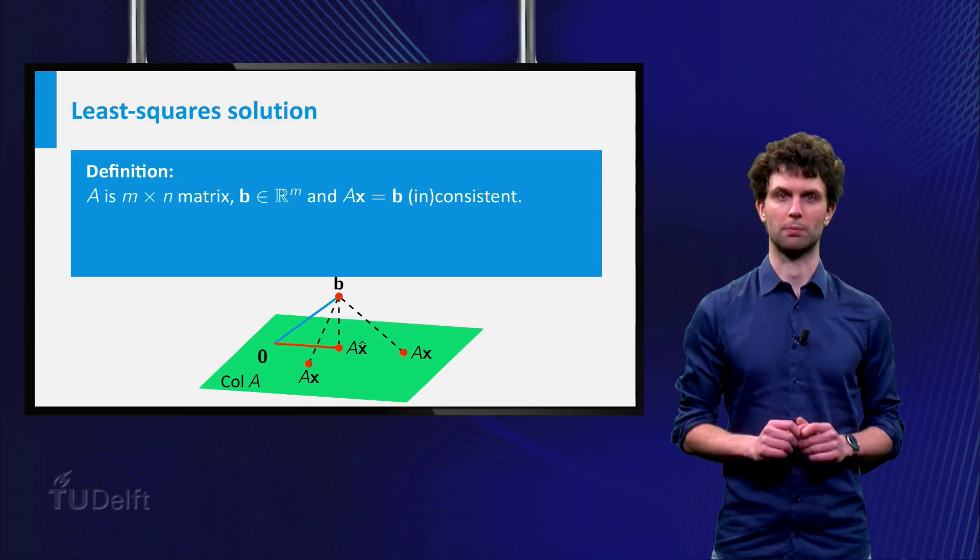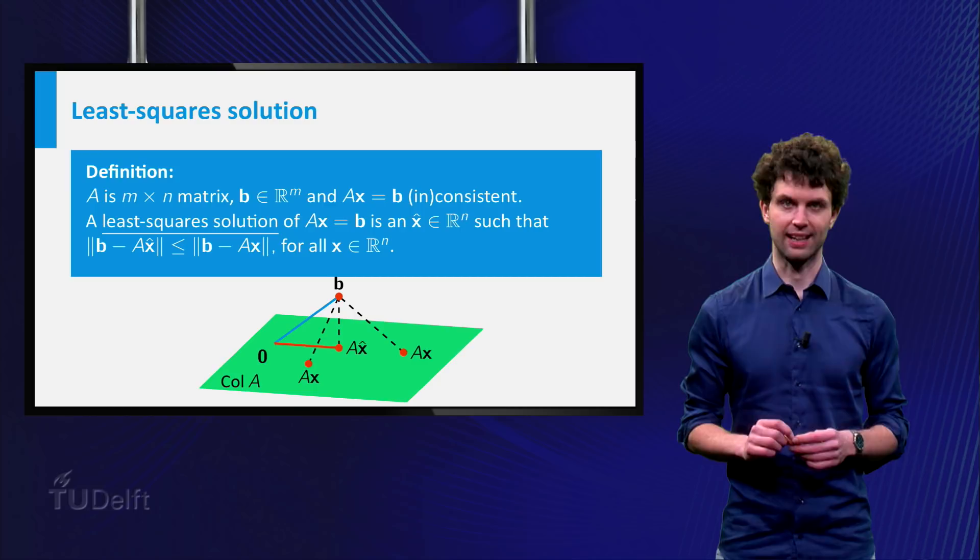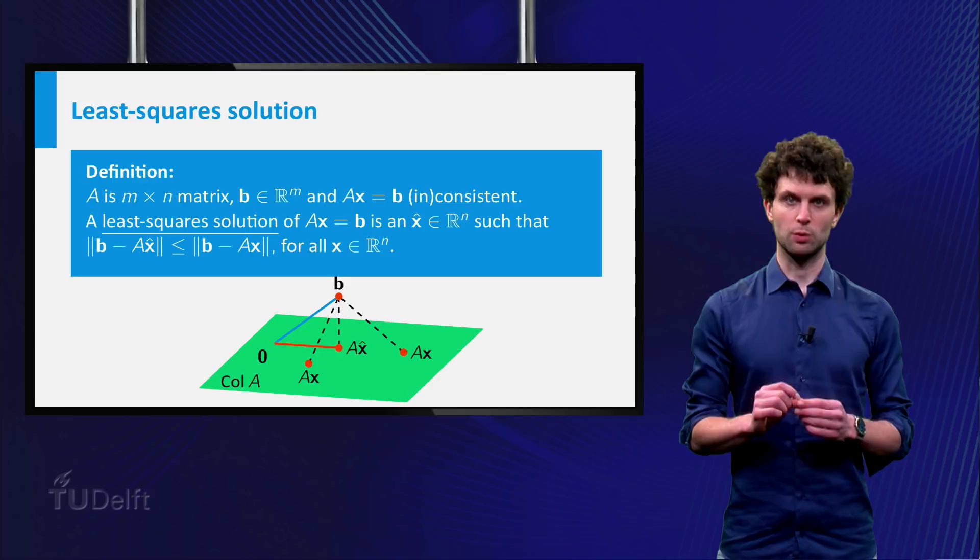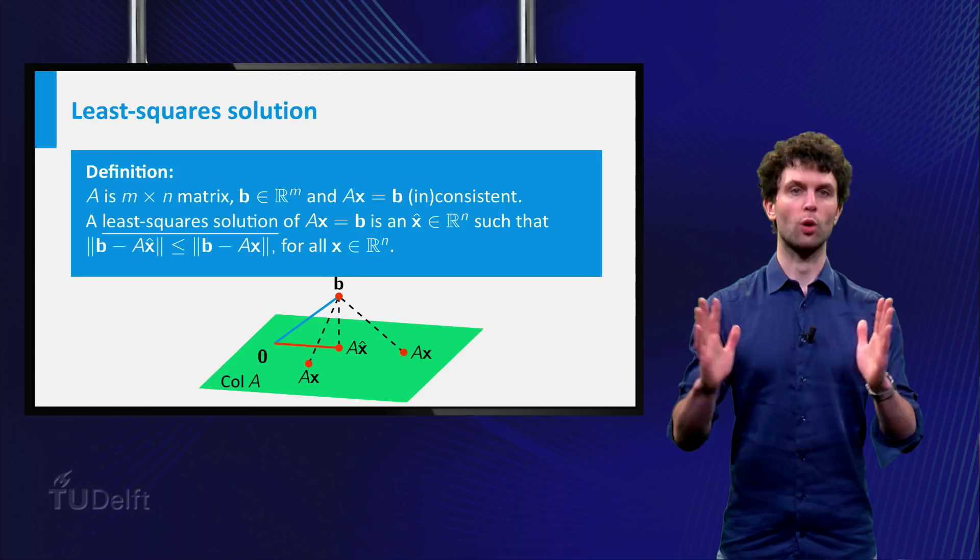This is a very important idea, and here is the formal definition. A least squares solution x̂ of the system Ax = b is a vector x̂ which satisfies the inequality that the distance between A times x̂ and b is smaller than or equal to the distance between A times x and b for all x in R^m.